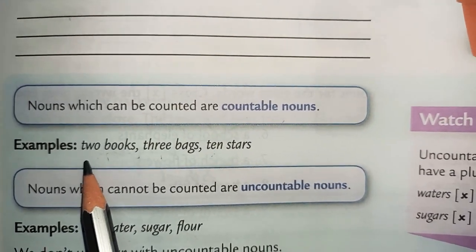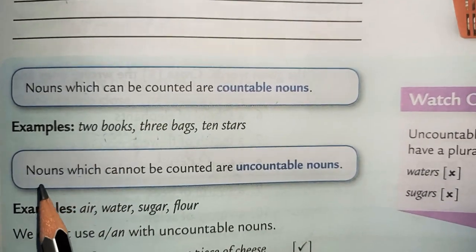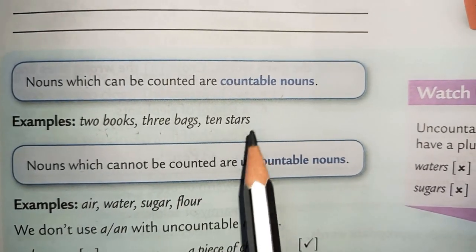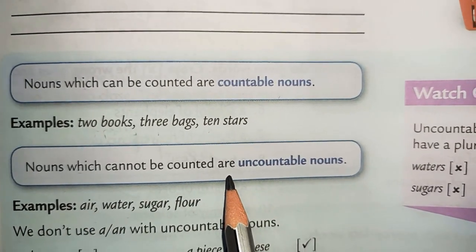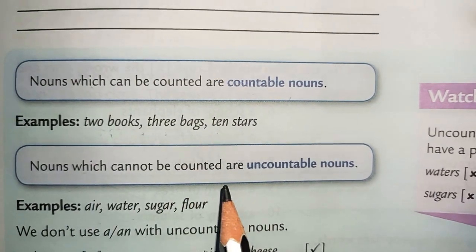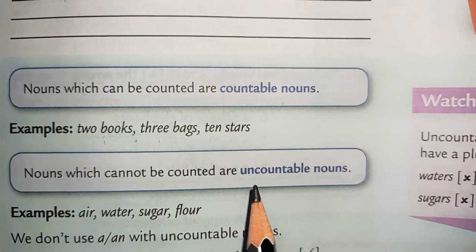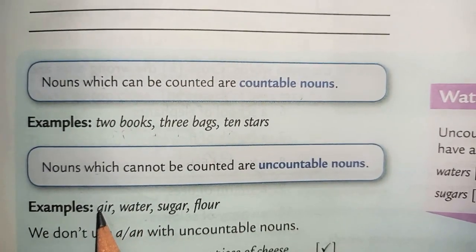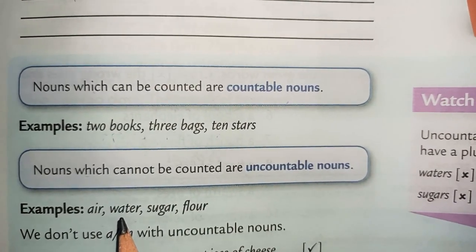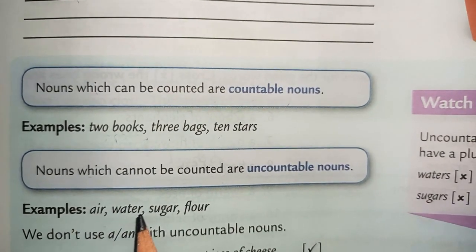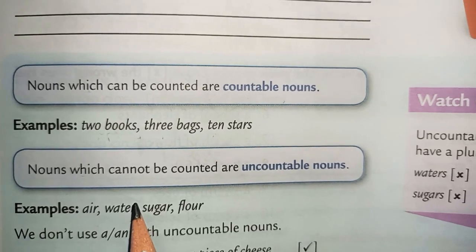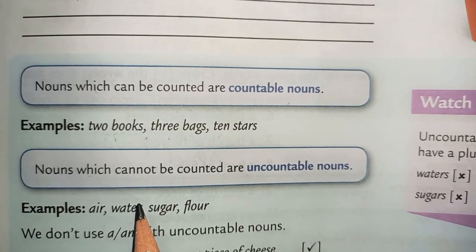So that's why they are countable nouns. Now, nouns which cannot be counted — because uncountable is the exact opposite of countable. The nouns which we cannot count are uncountable nouns. For example, air. As you know, in this room we have air, oxygen, carbon dioxide — there is a lot of air. But can we count it? Obviously no, so it is uncountable.